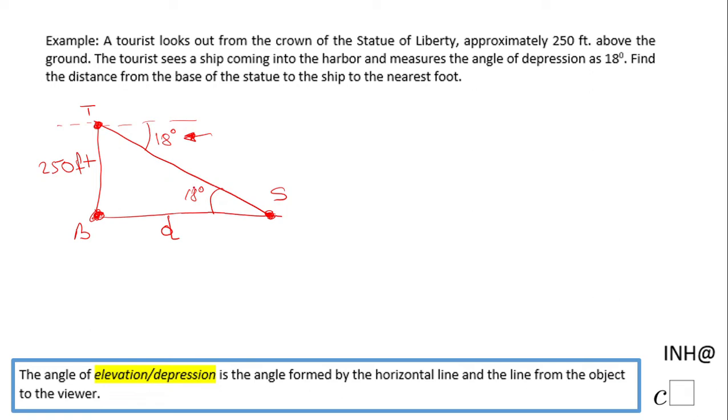So now we are looking in this right triangle. We notice we have this angle, we know the opposite leg, and we're looking for the adjacent leg. So that should tell us that we have to use the trigonometric ratio called tangent. So we have tangent of 18 equals 250 over D.